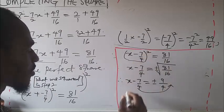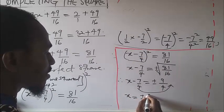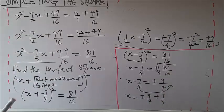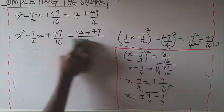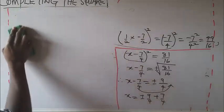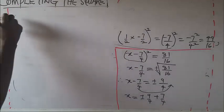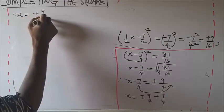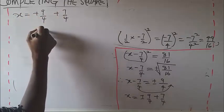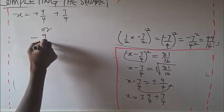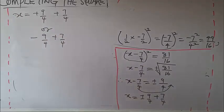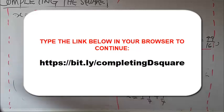Now transfer the constant. The minus 7/4 moves to the other side to become plus 7/4. So x equals plus or minus 9/4 plus 7/4. Since it's plus or minus, we split: x equals positive 9/4 plus 7/4, or x equals negative 9/4 plus 7/4.